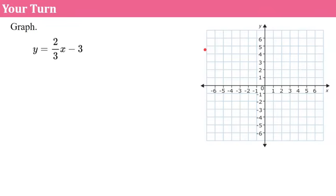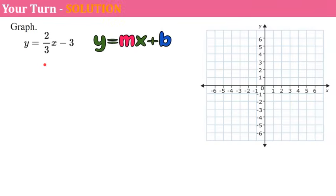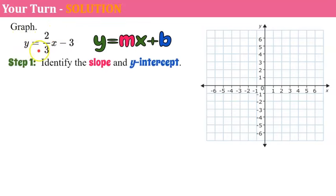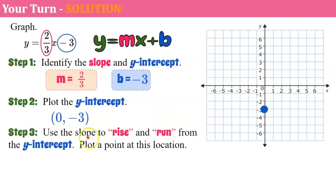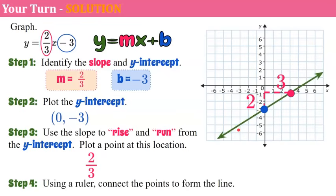Your turn — pause the video, graph the line, and come back when you're ready. Welcome back. Step 1: identify slope and y-intercept — slope is two-thirds, y-intercept is negative 3. Step 2: plot the y-intercept at (0, negative 3). Step 3: use slope to rise 2, run 3 from the y-intercept and plot a point. Step 4: connect the points. That is the line y equals two-thirds x minus 3.